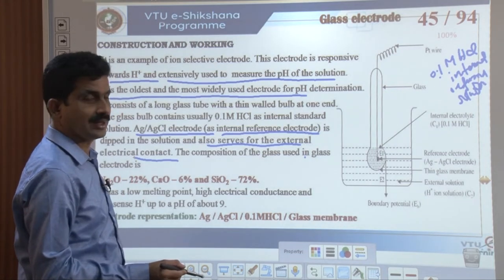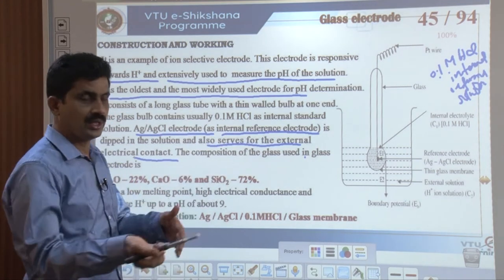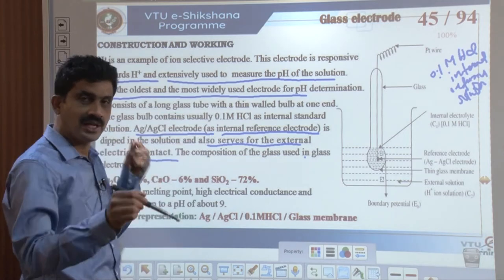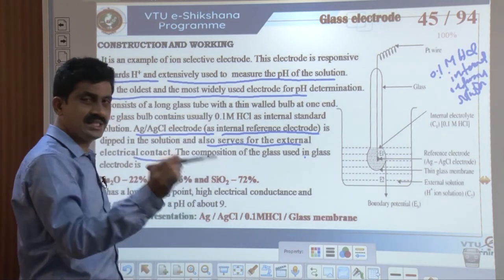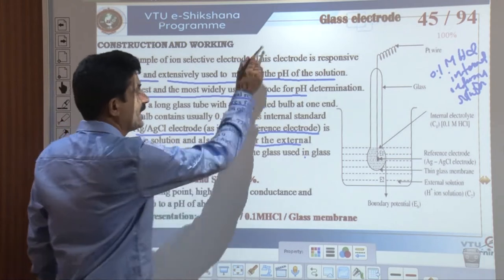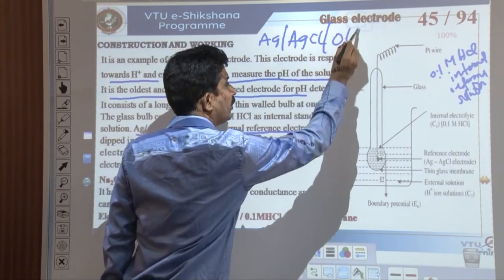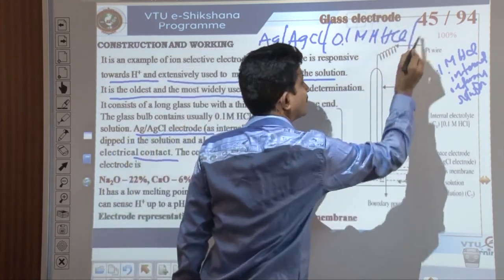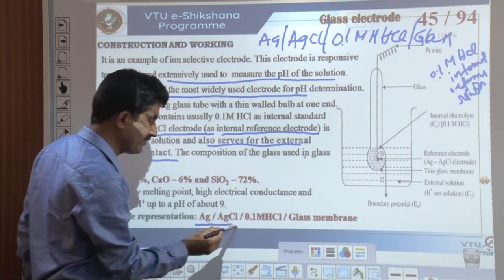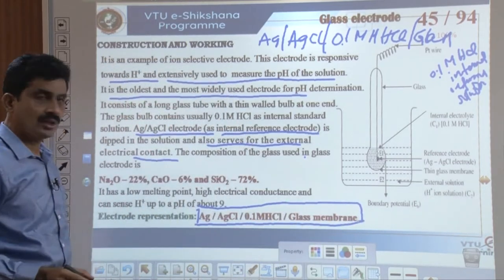The glass electrode is represented as: Ag/AgCl | 0.1 M HCl | glass membrane. This notation shows the internal reference electrode, the internal reference solution, and the glass membrane.